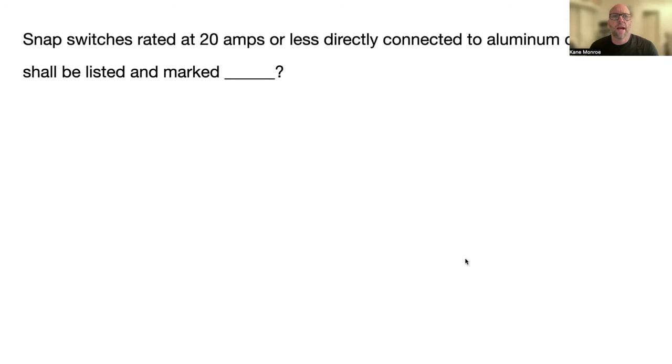Snap switches rated at 20 amps or less directly connected to aluminum conductors shall be listed and marked CO/ALR. So what that's telling is it's rated for copper and aluminum. That's on 404.14C.